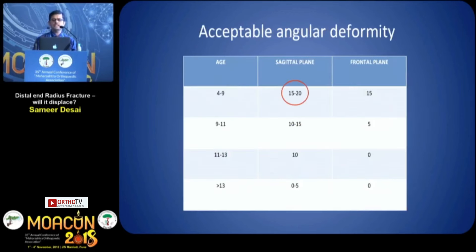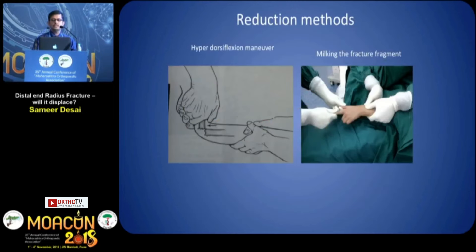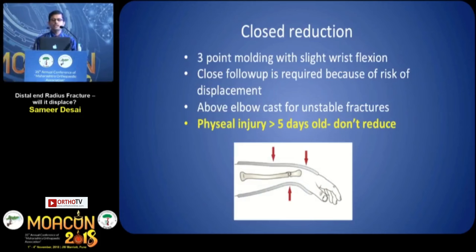The acceptable angular deformity for children less than 9 years is approximately 15 to 20 degrees, and for children more than 13 years it is 0 to 5 degrees. The reduction maneuvers you can perform include hyper-dorsiflexion or milking the fracture fragment, and of course 3-point molding with slight volar flexion. Close follow-up is required because of the risk of displacement.